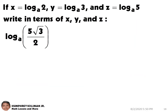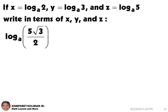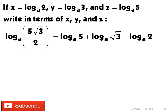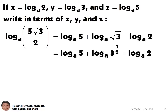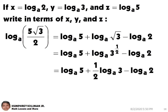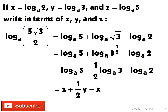In our next example, we need to write the logarithmic expression in terms of x, y, and z. We can use the laws of logarithms to expand the expression. And then, square root of 3 becomes 3 raised to 1 half. Then, we can write the exponent of 3 in front of the logarithm. We now have z plus 1 half of y, minus x.